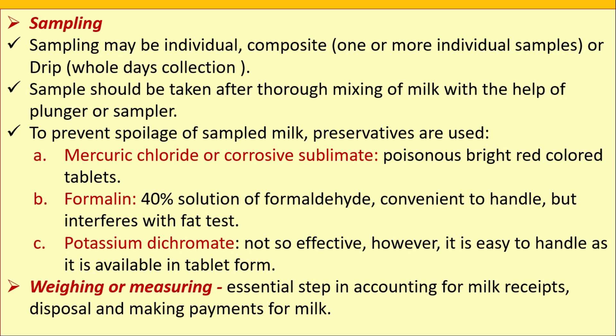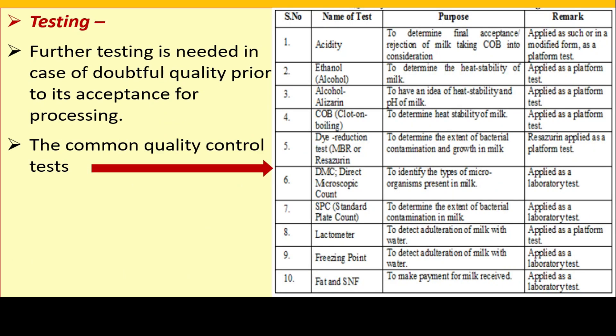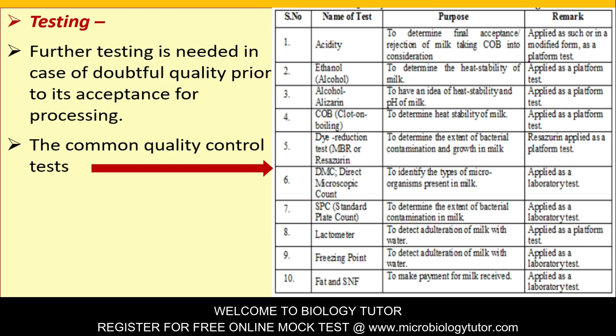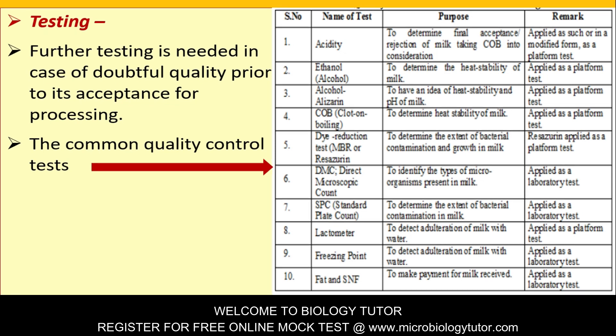Potassium dichromate: not so effective but easy to handle as it is available in tablet form. Weighing or measuring is an essential step in accounting for milk receipts, dispersion, and making payments for milk. Further testing is needed in case of doubtful quality prior to acceptance for processing. The common quality control tests are displayed on the right side — you must read this for your exams.